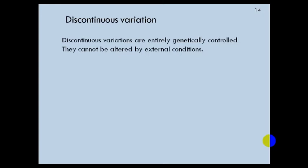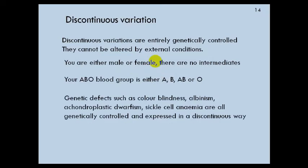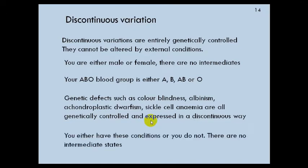Discontinuous variation is entirely genetically controlled and cannot be altered by external conditions. You are either male or female — there is no intermediate group between them. Your blood group is either A, B, AB, or O. Genetic conditions like colour blindness, albinism, achondroplastic dwarfism, and sickle cell anaemia are all genetically controlled and expressed in a discontinuous way — you either have the condition or you do not. There are no intermediate states.